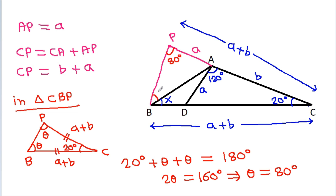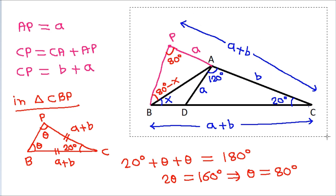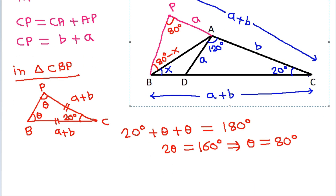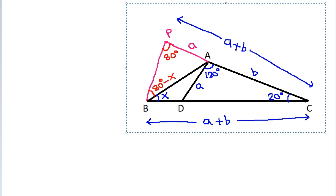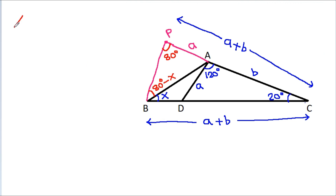So this angle is 80 degrees, and this angle will be 80 degrees minus X, because angle ABD is X. We have angle CPB equal to 80 degrees.